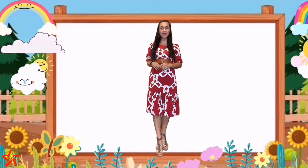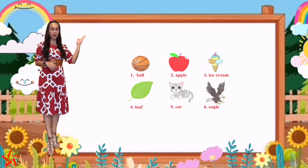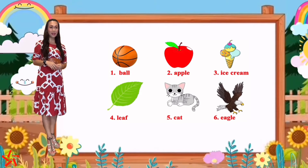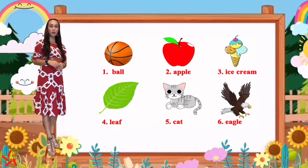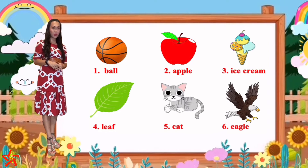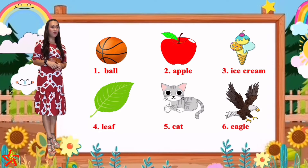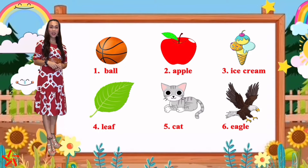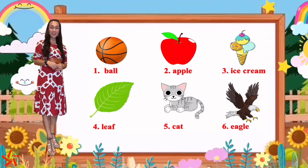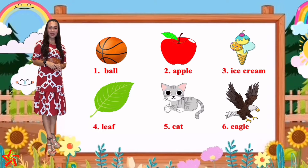Before that, teacher Isa has 6 pictures. Can you look at the pictures please? Number 1 is ball, B-A-L-L. Number 2, apple, A-P-P-L-E. Number 3, ice cream, I-C-E-C-R-E-A-M. Number 4, leaf, L-E-A-F. Number 5, cat, C-A-T. And number 6, eagle, E-A-G-L-E.